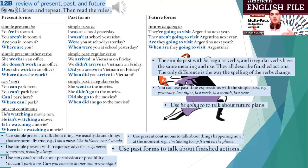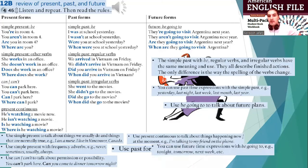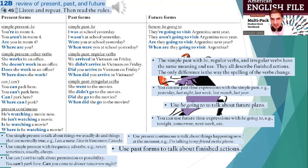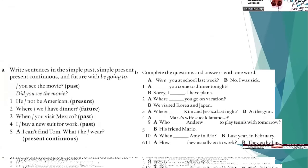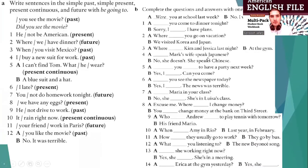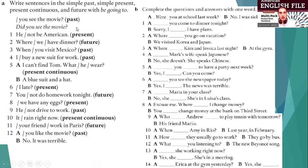Future. With that, use tonight, tomorrow, next week, next year. Now let's practice your skills. Show me your potential. We have two series of questions here. The first one is write sentences in the simple past, simple present continuous, future with going to. At the same time, B — complete the questions and answers with one word.